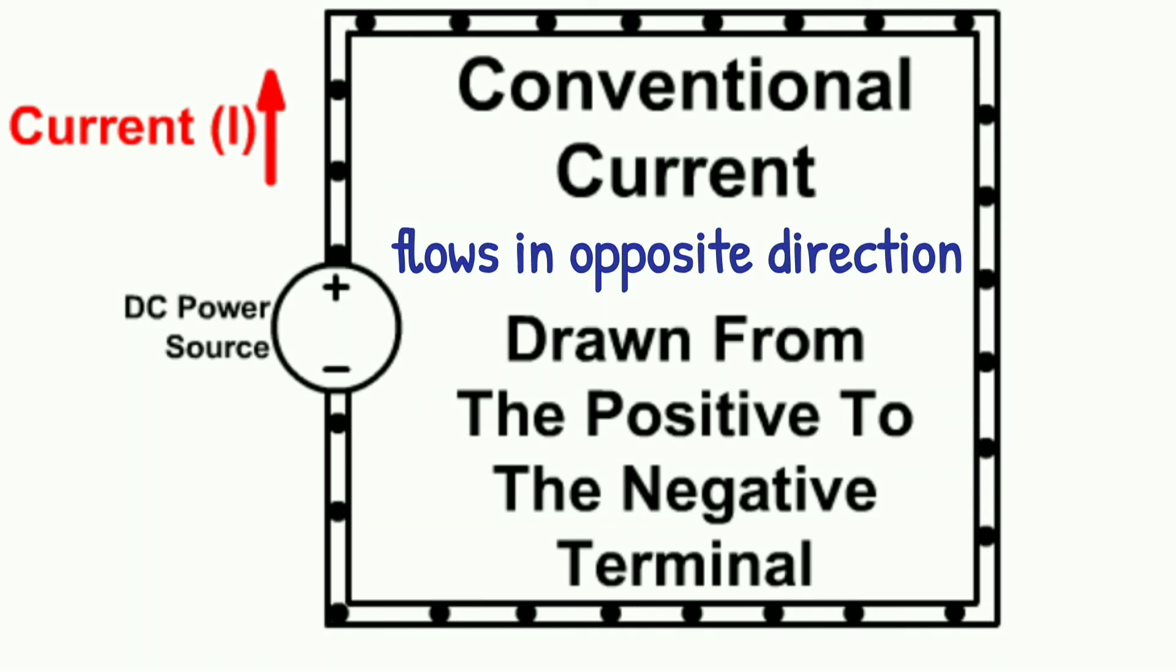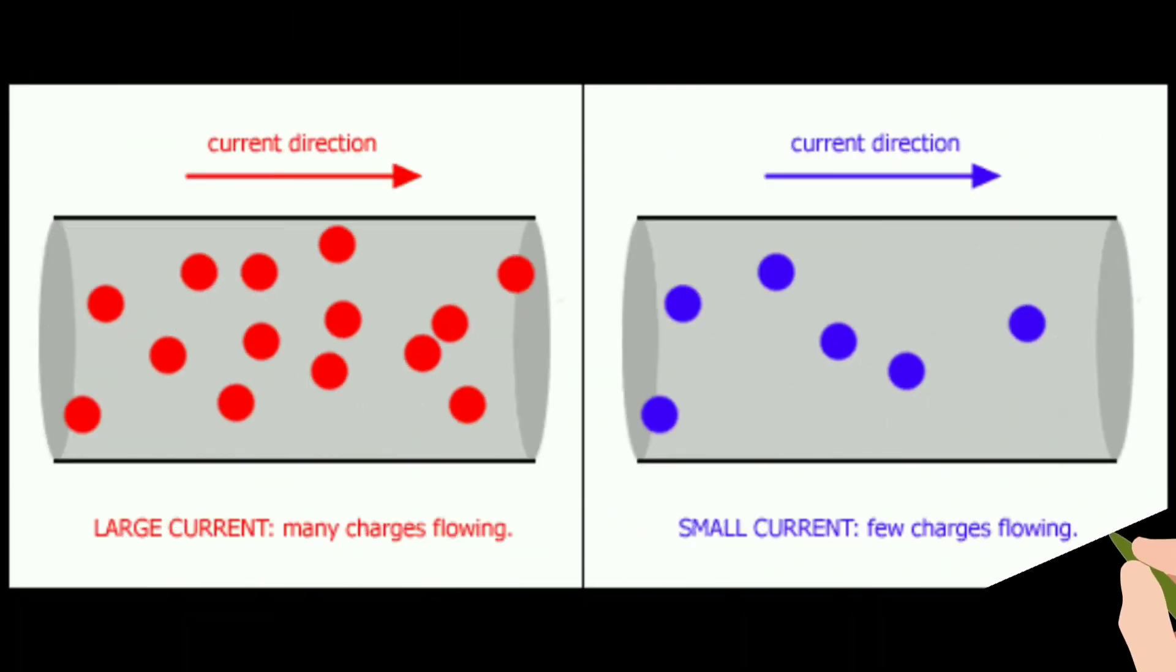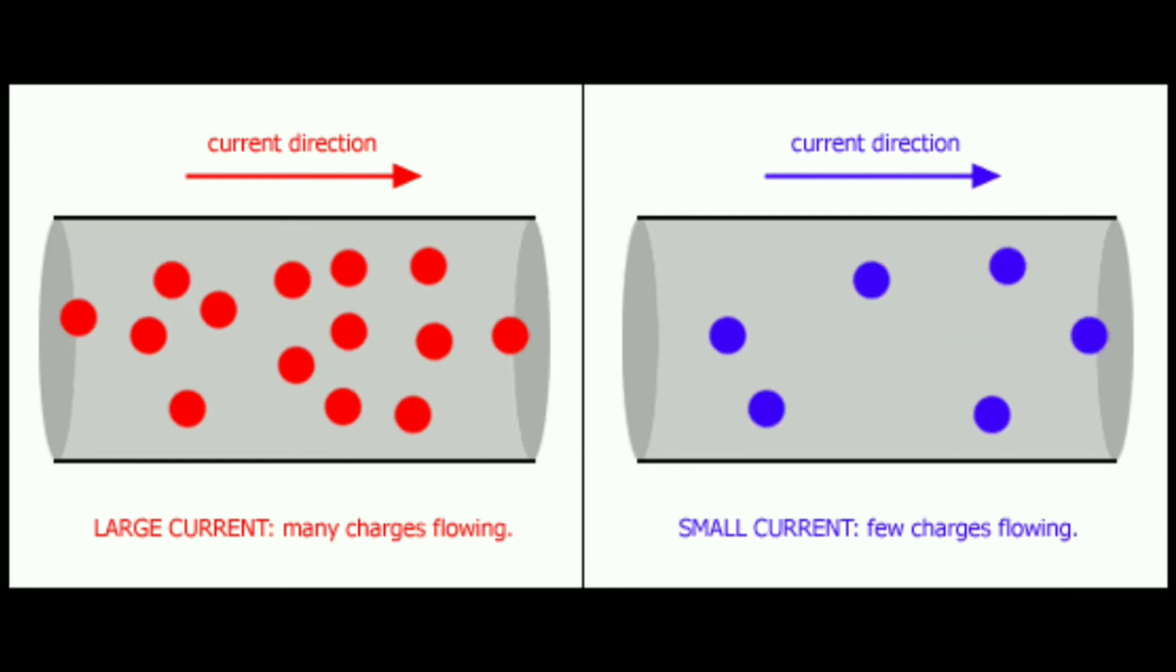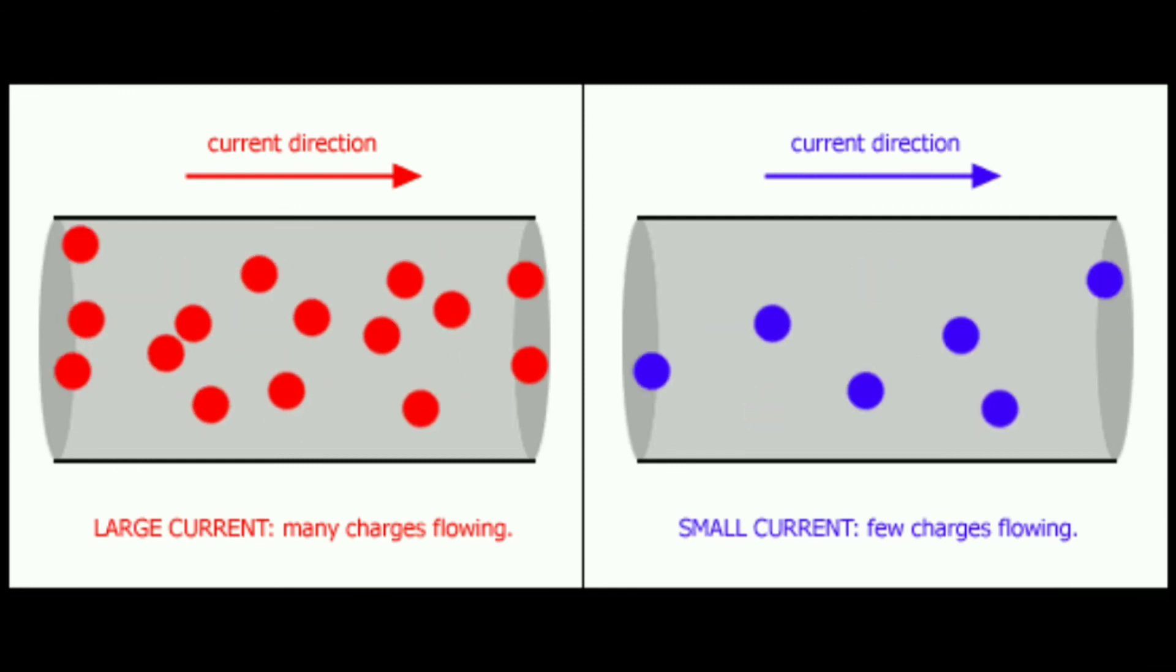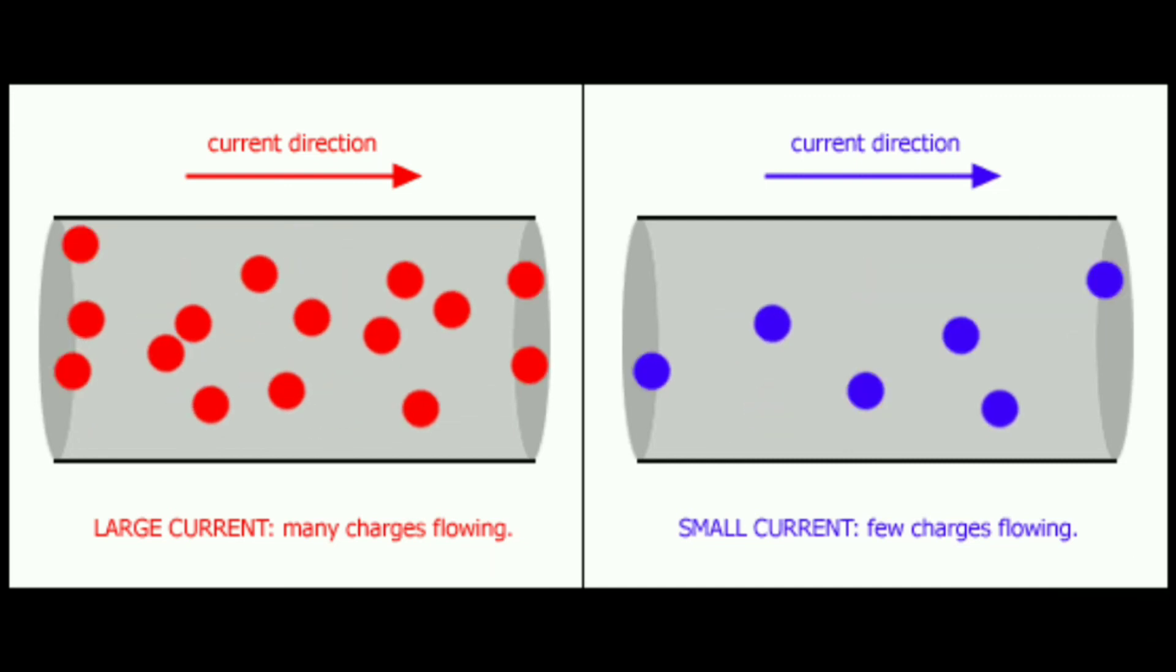Electric current depends on the amount of charge. More the electrons or charge, more the electric current, and less the electrons or charge, less the electric current.